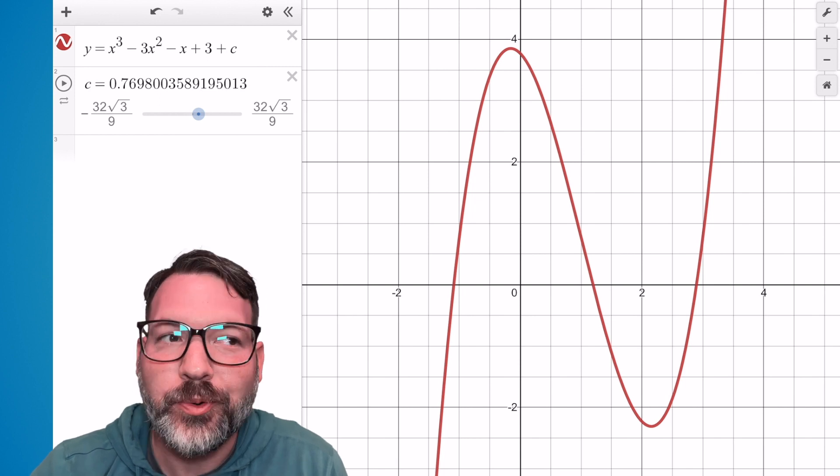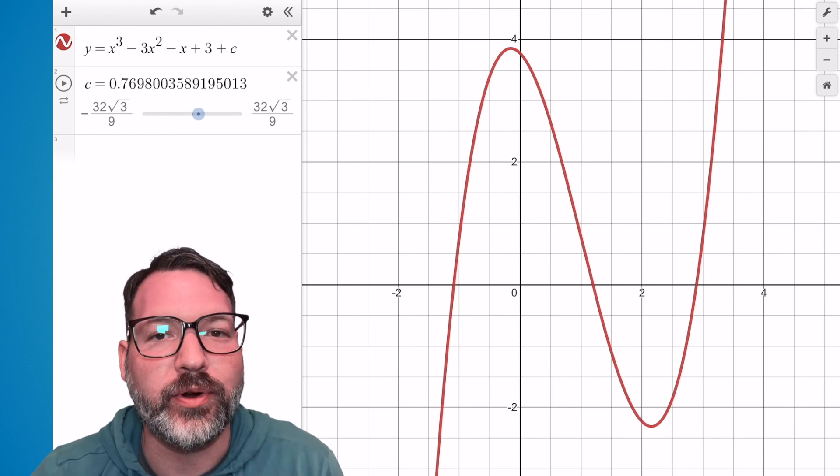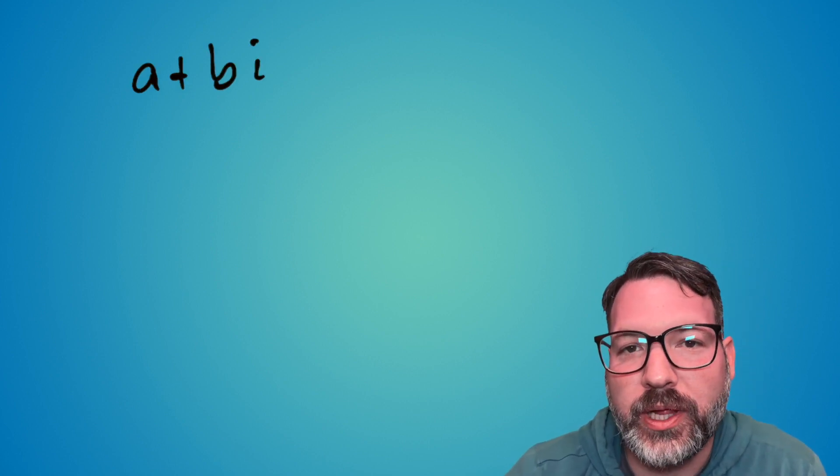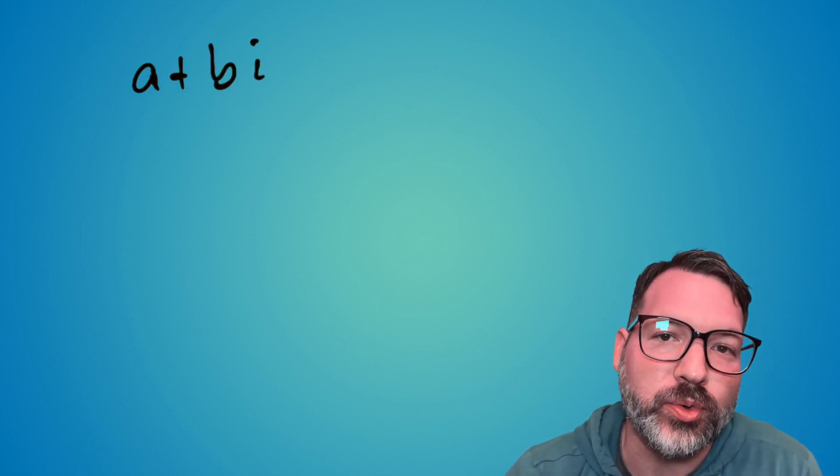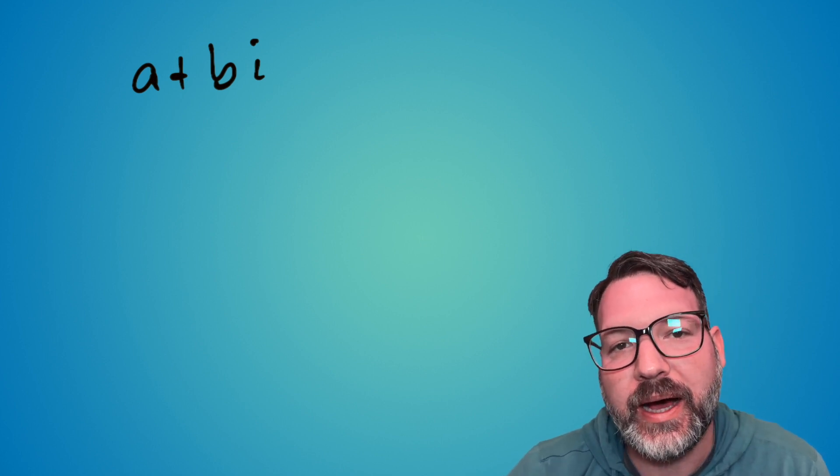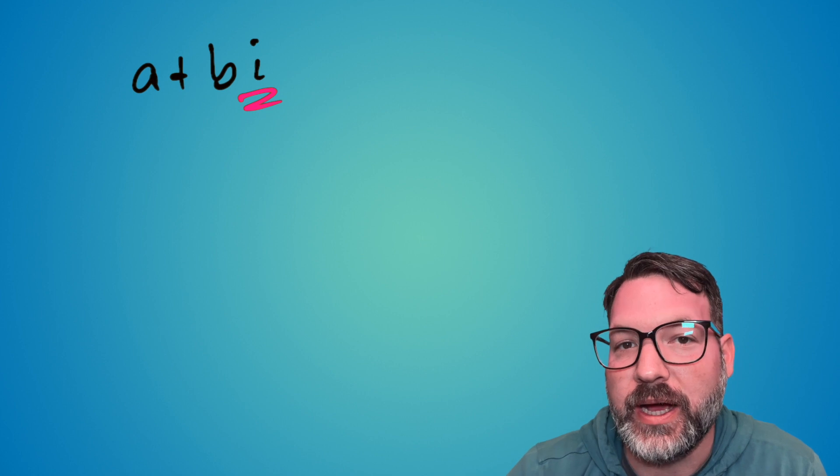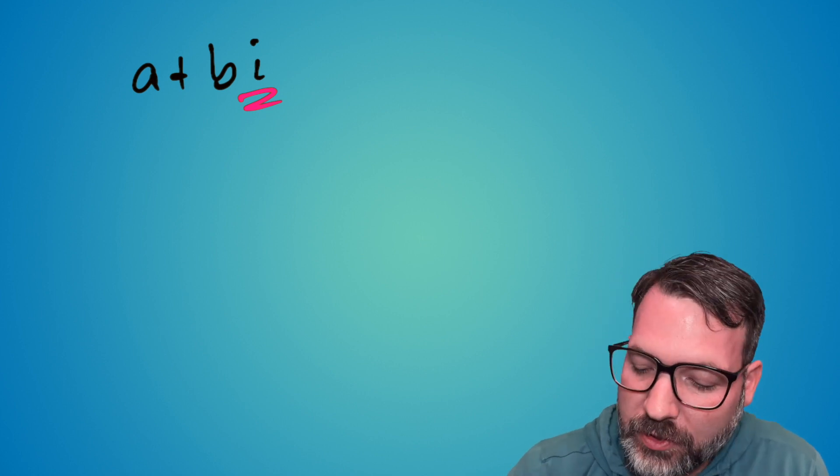But the fundamental theorem of algebra confirms for us we're actually not changing the number of complex solutions. So a complex number, you may remember, is actually a superset of the real numbers. Complex numbers typically occur to us in the form a plus bi, where a is the real part of the number and bi is the imaginary part of the number, coming from that imaginary i.